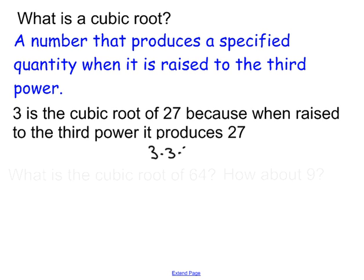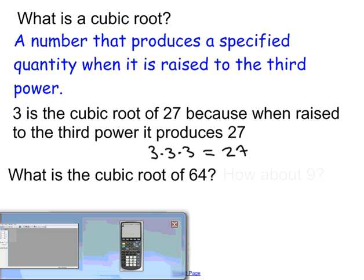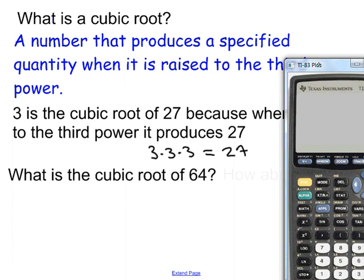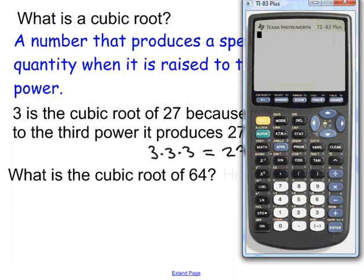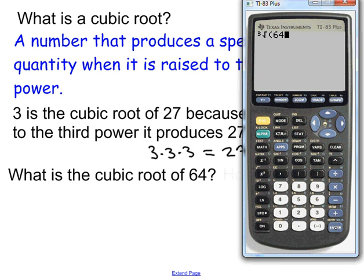3 times 3 times 3 gives you 27, so 3 is the cubic root of 27. So what would be the cubic root of 64? Let me show you how to do this on the calculator. On your TI-83, there is a function when you press math and you see the cubic root symbol — or you could just press the number 4 to scroll down to it. We want the cubic root of 64, so we press enter and type in 64. The cubic root of 64 is equal to 4, because 4 raised to the third power gives you 64.